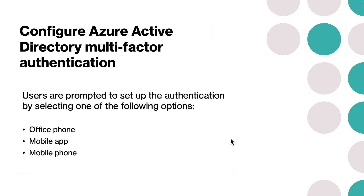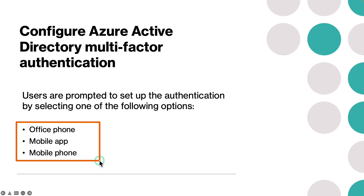The next step is to configure Azure Active Directory multi-factor authentication for these accounts or your domain. After you configure MFA for a user account, at the next sign-in attempt the user is prompted to set up authentication by selecting one of these options: they can either use an office phone, a mobile app, or a mobile phone.